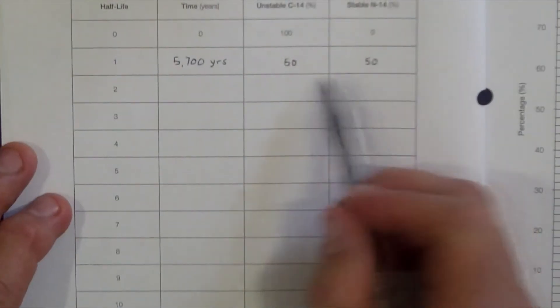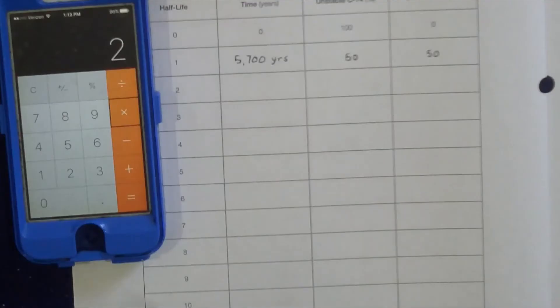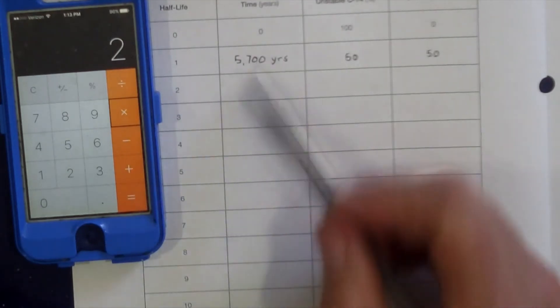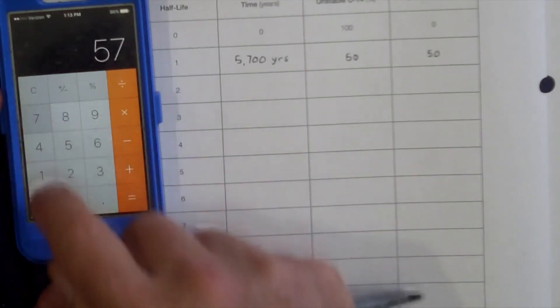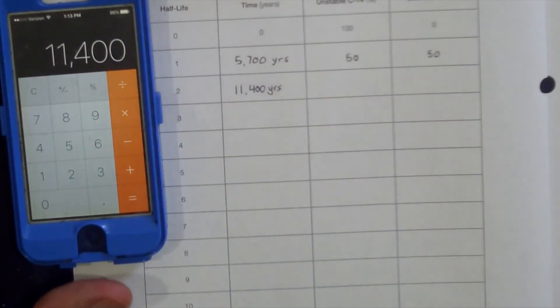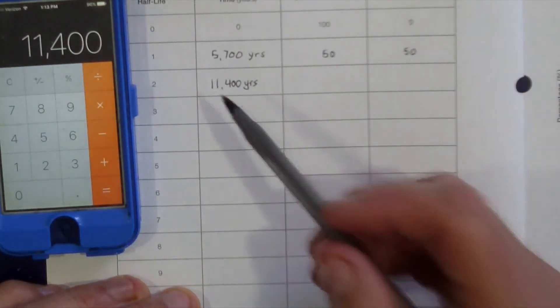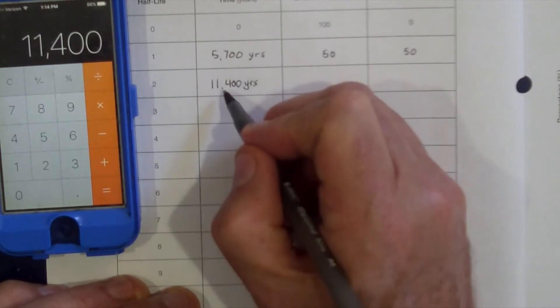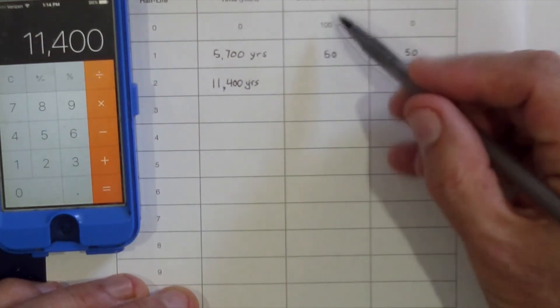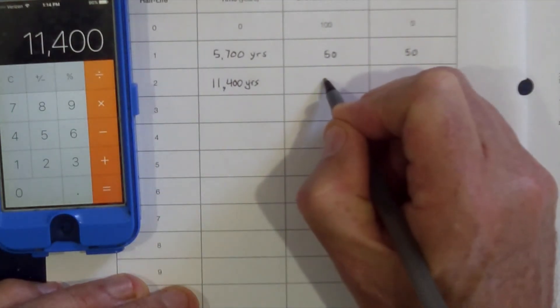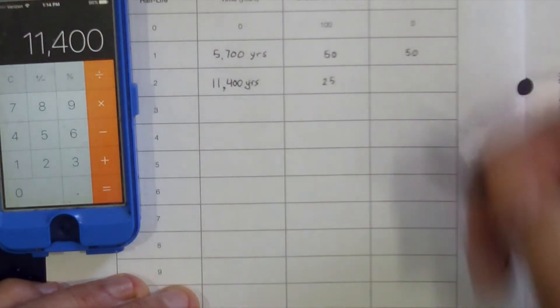Notice that 50 plus 50 equals 100. Two half-lives is equal to 2 times 5,700. After another 5,700 years, leading us up to 11,400 years, what was 50% Carbon-14 is now half of that, down to 25% of the original.